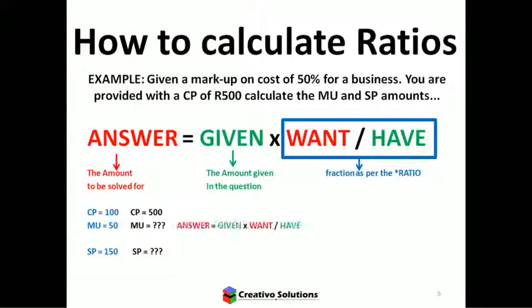We want the markup. The given in the question is 500. Looking at the ratio — the want goes with the answer, so I want the markup, which represents 50. What I have is the cost, which represents 100. So the ratio is 50 over 100. Markup equals 500 times 50 divided by 100, which gives 250. Once I have the markup, cost price plus markup equals selling price: 500 plus 250 gives 750 Rand.